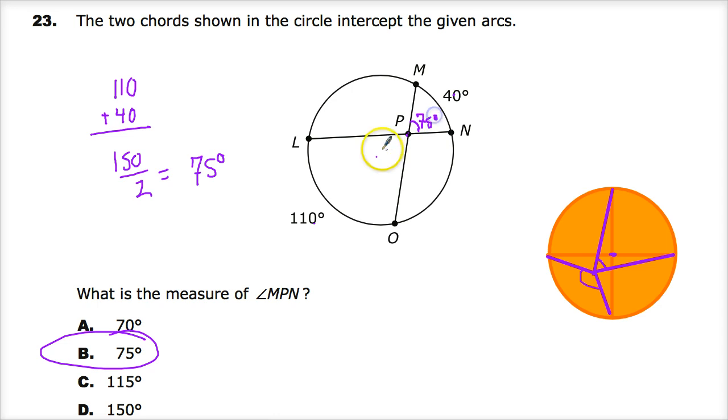And because these are vertical angles, this one's also 75. And then these will be based off of minus 180 because they're supplementary. Just FYI.